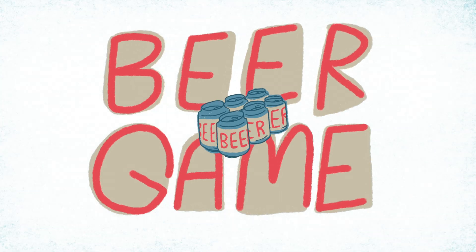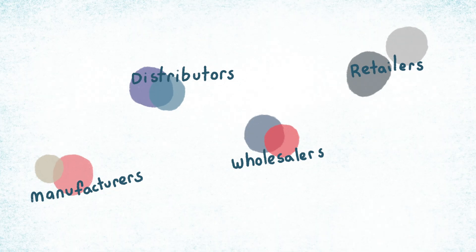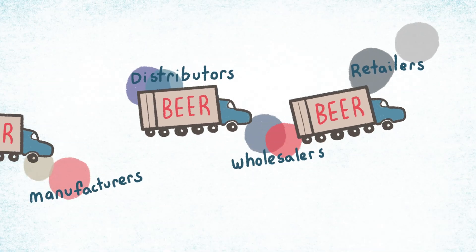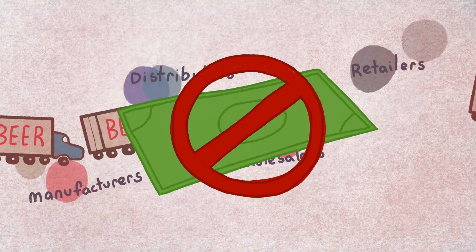Traditionally, the beer game includes four players taking roles in the supply chain and placing and filling orders from one another. The game teaches students about inventory dynamics, but it had no cash component and didn't reflect the real world.